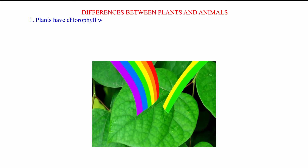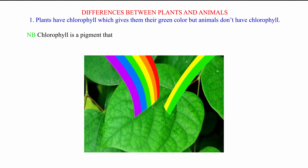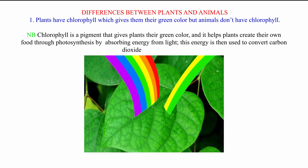Differences between plants and animals. One: plants have chlorophyll which gives them their green color, but animals don't have chlorophyll. NB: chlorophyll is a pigment that gives plants their green color and it helps plants create their own food through photosynthesis by absorbing energy from light. This energy is then used to convert carbon dioxide to carbohydrates.